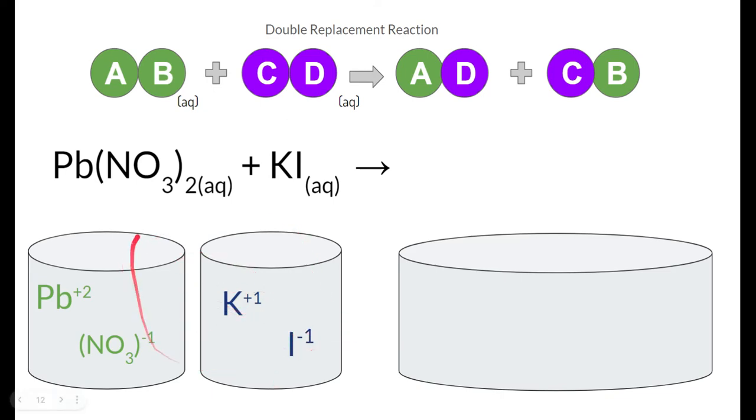Now what we're going to do is we're going to take these two substances, and we're going to mix them together. That's designated by this arrow. So they're going to go into this vat over here mixed together. Now if you notice what happens, they switch their partners. It's called the double replacement reaction.